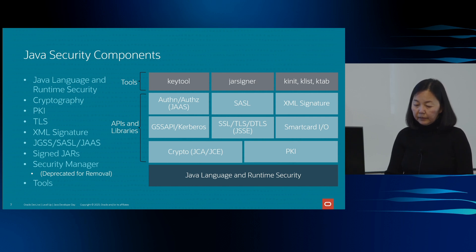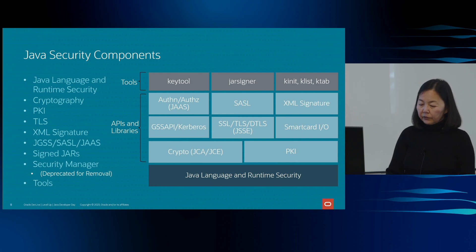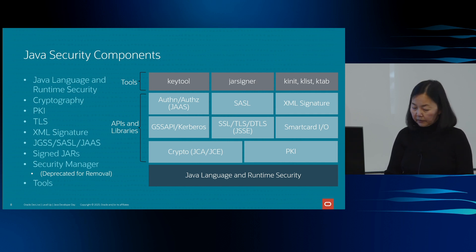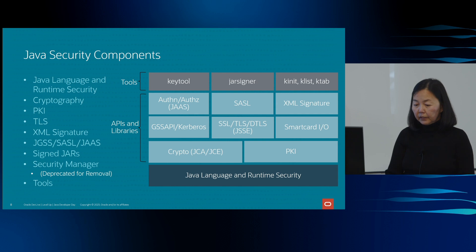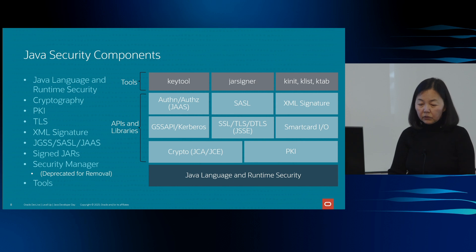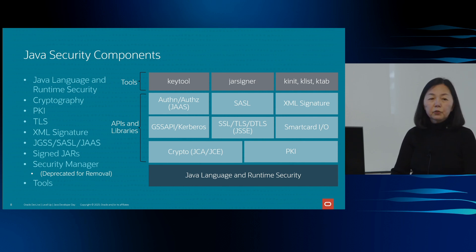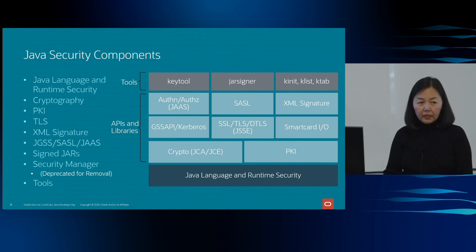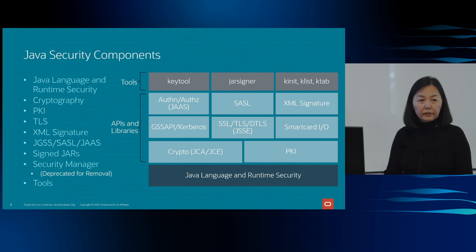The PKI component contains APIs and implementations for validating and building certification paths and storage of keys and certificates. The transport layer security component contains APIs and implementations for TLS, which is the successor to SSL and DTLS. The XML signature component contains an API implementation for generating and validating XML signatures. The JGSS and SASL frameworks provide APIs for authentication and authorization, with Kerberos being the most popular mechanism. SignJars allows you to supply a digital signature to a JAR file to provide data integrity and authenticity.